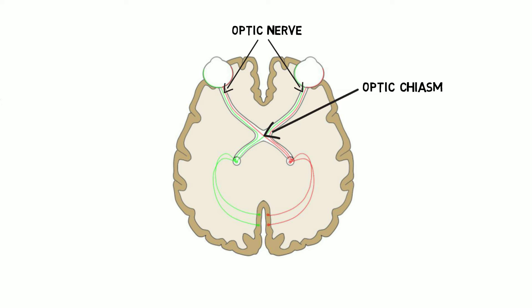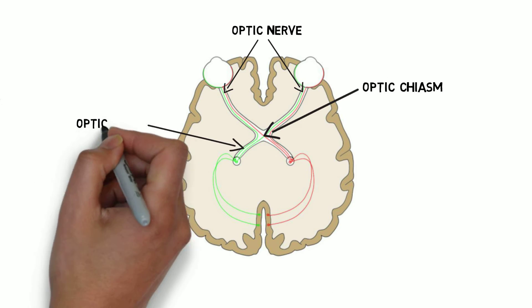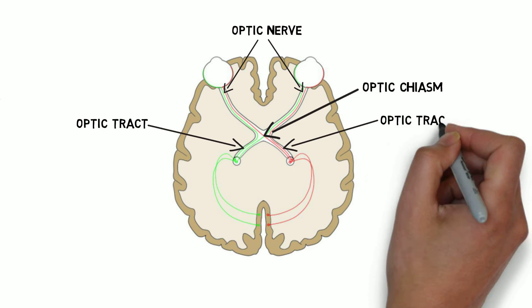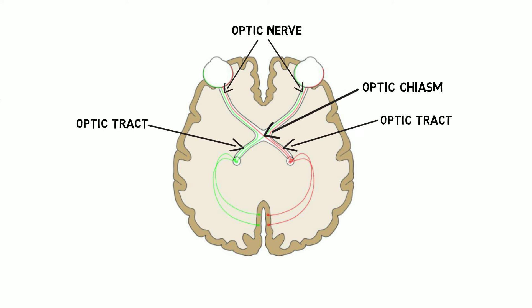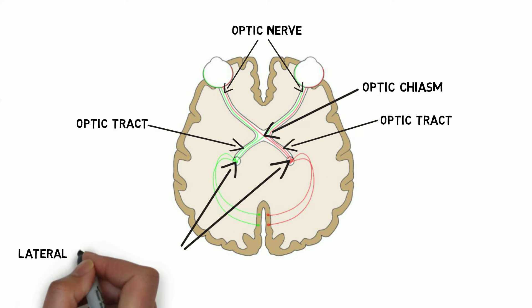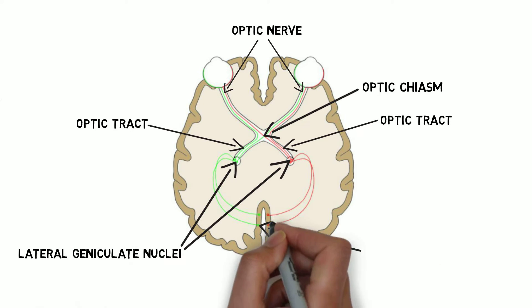After leaving the optic chiasm, the nerve fibers are referred to as the optic tract. Most of the nerve fibers in the optic tract end in the lateral geniculate nucleus of the thalamus, and from there the information will be passed on to the visual cortex.